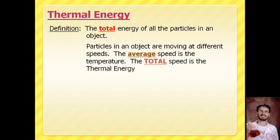Thermal energy is the total energy of all the particles in an object. When you calculate an average, you add up all the values and divide by the number of values — that is temperature. Thermal energy is the total: when you add up all the available energy in all the particles in the substance, that is your thermal energy. When you divide that thermal energy by how many particles you have, that would be your temperature.